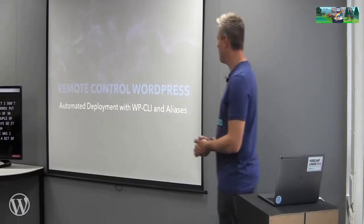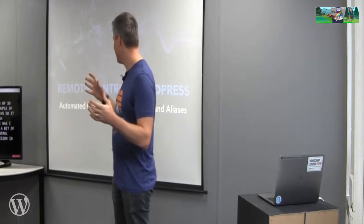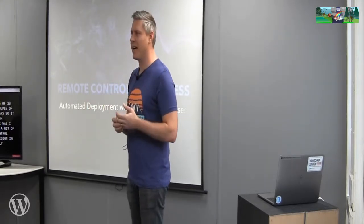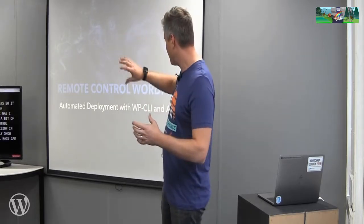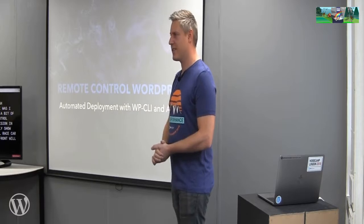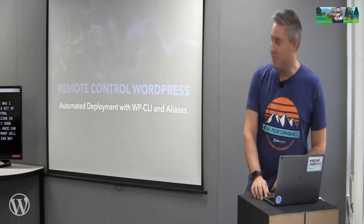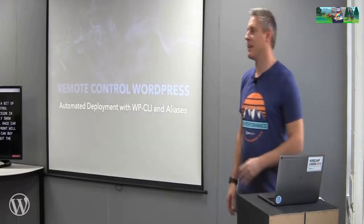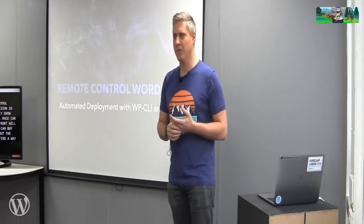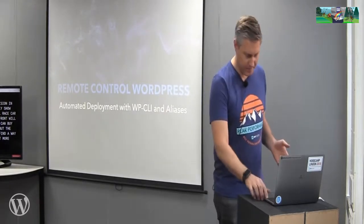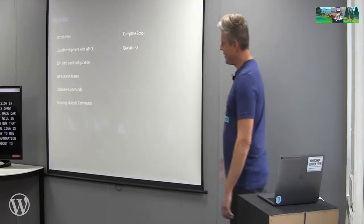I thought of this really cool name, 'Remote Control WordPress,' and I was trying to envision what I could do to visually show that. I thought a really cool race car with a WordPress logo on the front would be cool. I looked at stock art and decided not to buy that, but the idea is I wanted to find a way to use WP CLI and do a little bit more automation. Come on in.